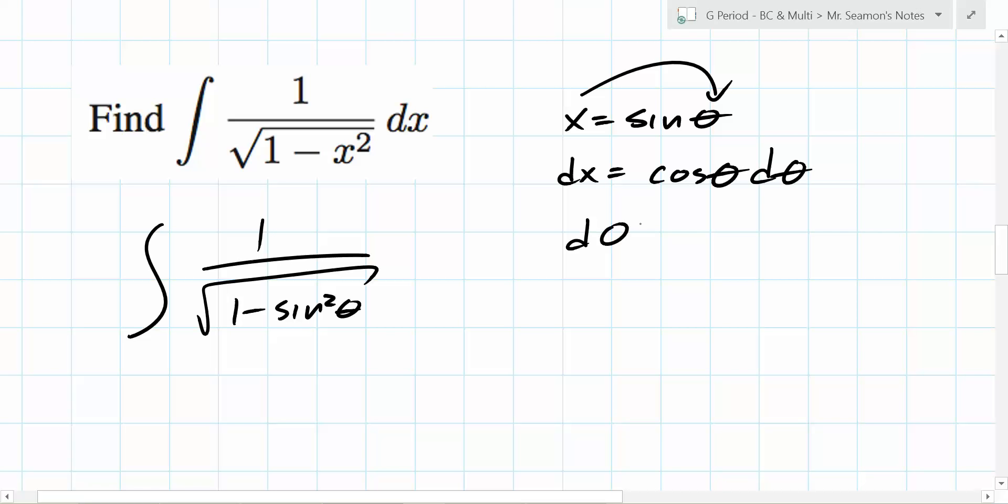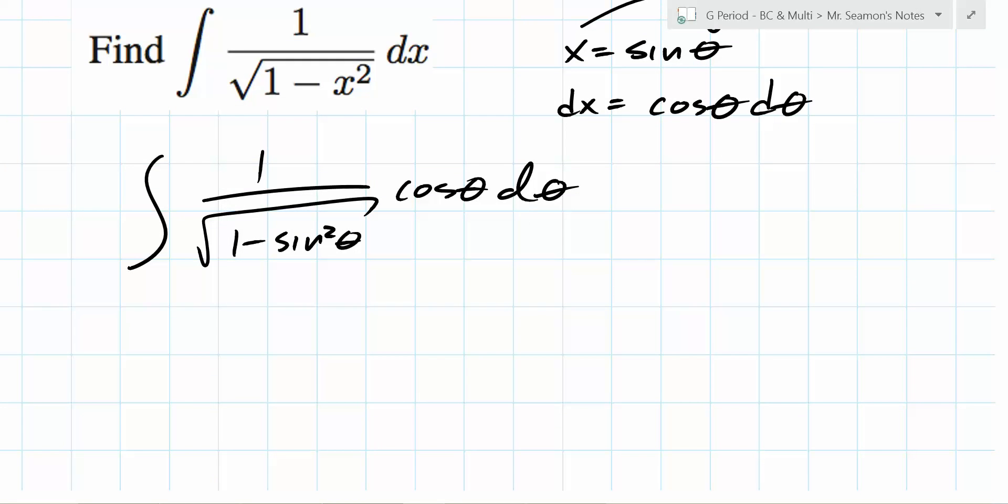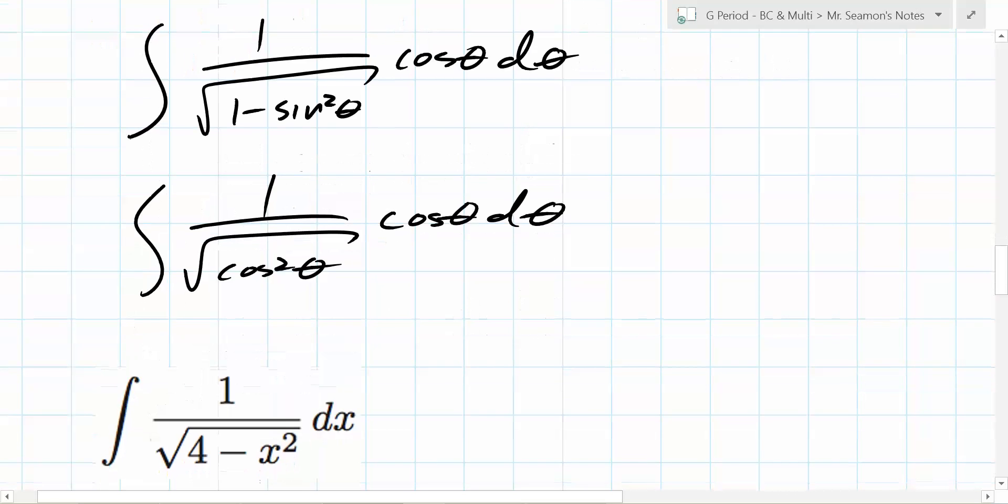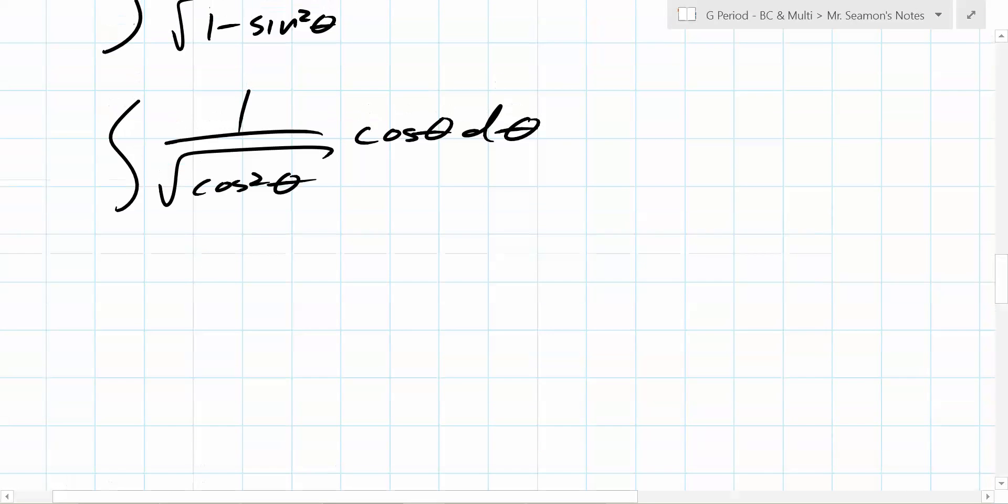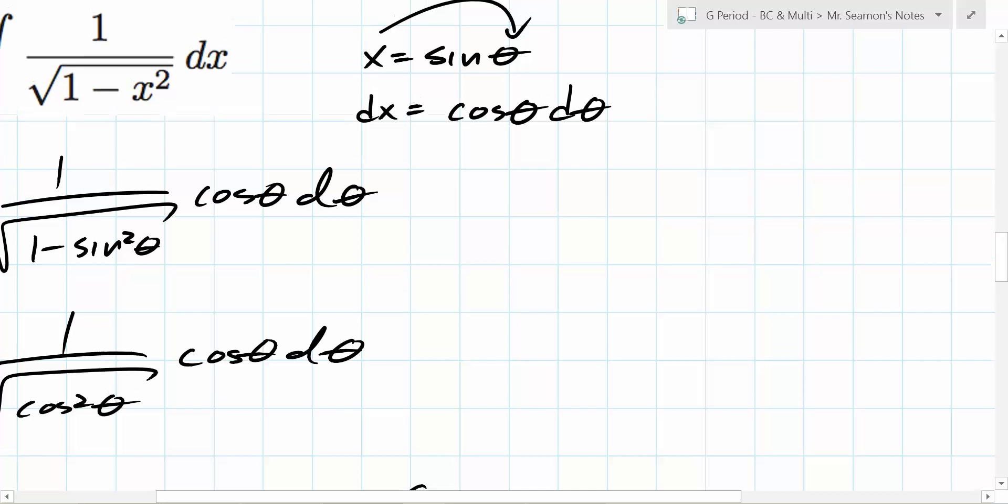So now, instead of dx, what do we write? Cosine theta d theta. You have to be very careful about that. You're like, oh man, I just made it worse. But what's one minus sine squared? Cosine squared. So that's the square root of cosine squared. What's the square root of that? Cosine theta. It's become one d theta. So we have one over cosine theta times cosine theta d theta equals the integral of what? One d theta, which equals theta plus C, right?